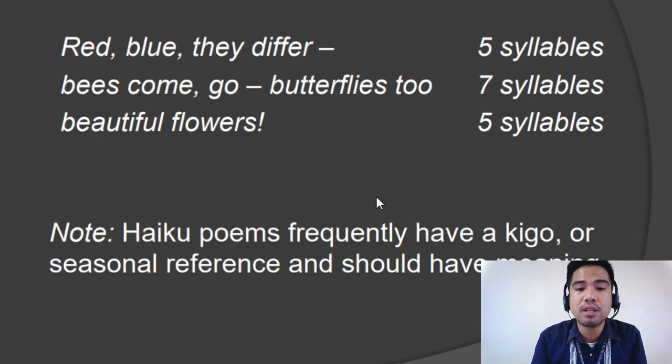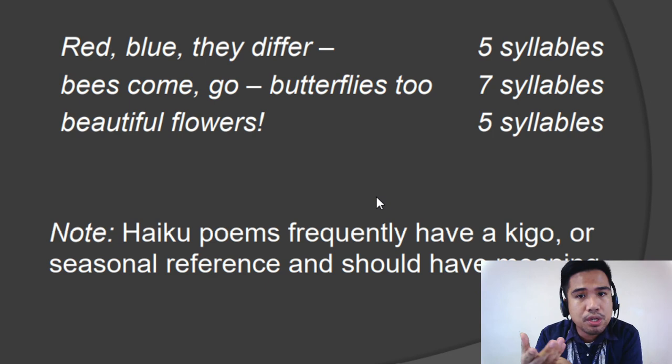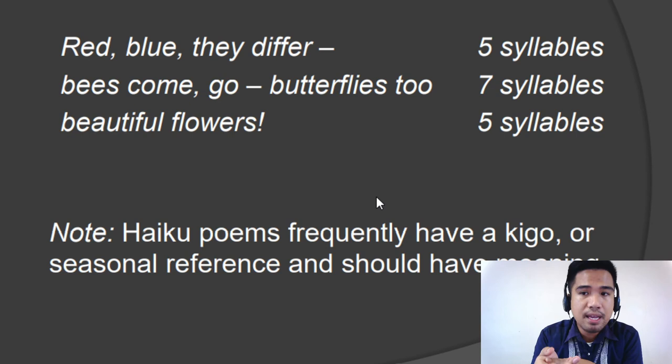Now, take note. Haiku poems frequently have a kigo, or seasonal reference, and should have meaning. As I told you, haikus are perfectly made when it comes to environment and the four seasons. But when you make a haiku, it doesn't mean you're just going to throw words into the line to meet the five-seven-five syllabic number pattern. No — your haiku should have meaning and should be understood. I hope that is very clear.